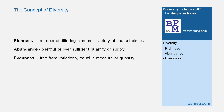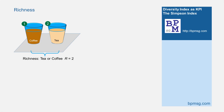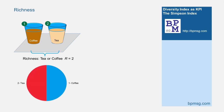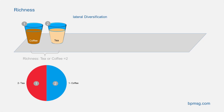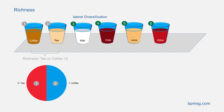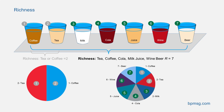Let us assume you operate a small snack bar and you offer coffee and tea as drinks only. So the richness of type of drinks you offer is two. Customers who want other drinks served with their snack will probably go to other eating places. With a simple lateral diversification, offering in addition milk, cola, juice, wine and beer, you increase the type of drinks — the richness — to seven.